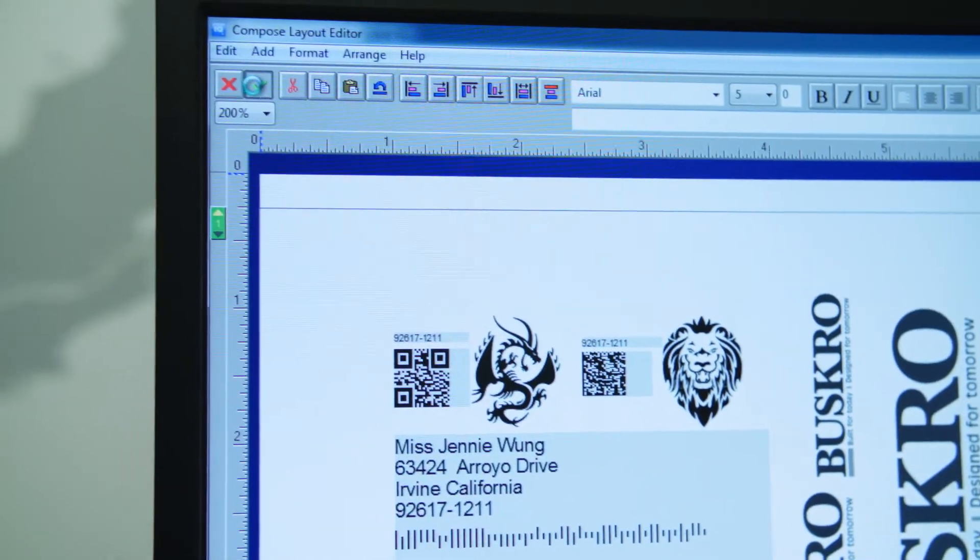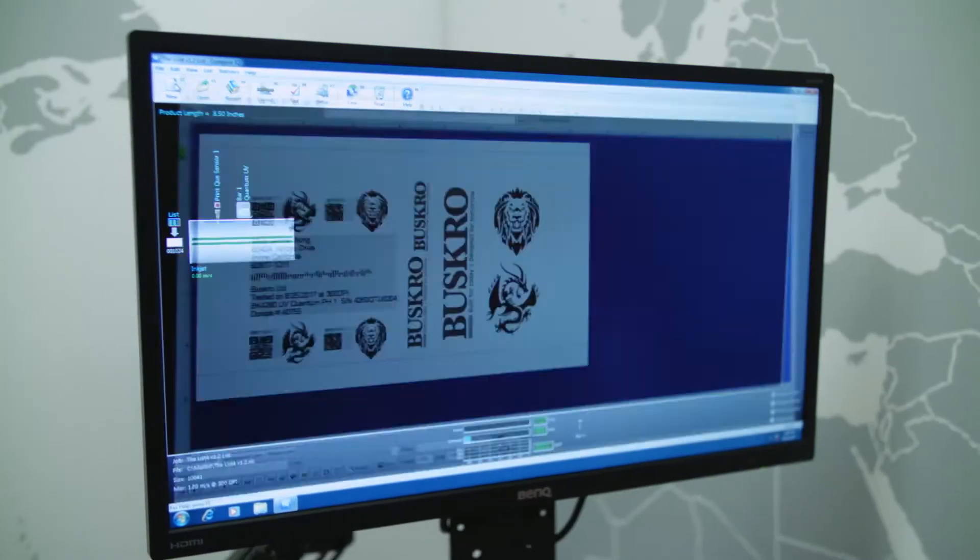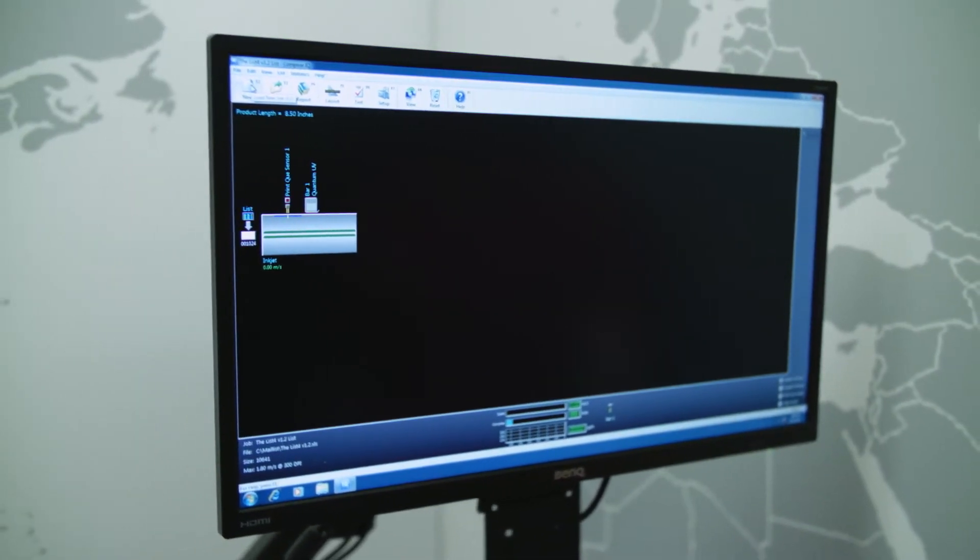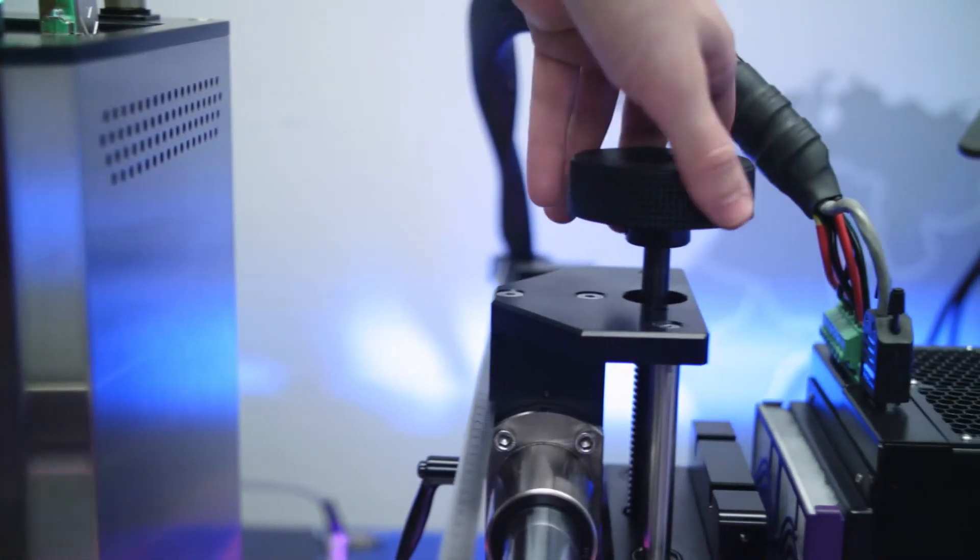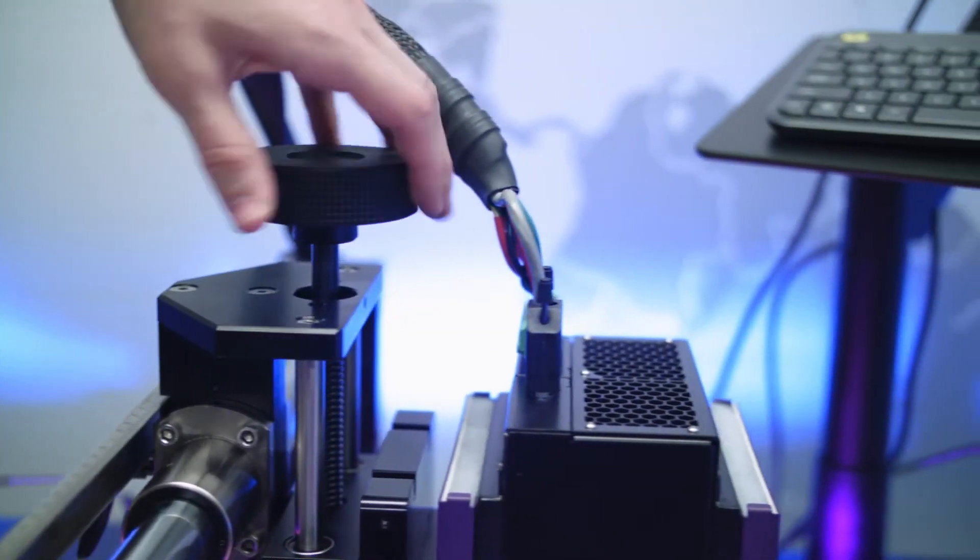We've included a number of simple controls on Compose to allow us to optimize some of the features of the Kyocera print head, namely the ability to change resolutions and the drop level so that you can optimize the print resolution to meet your customer's requirements.